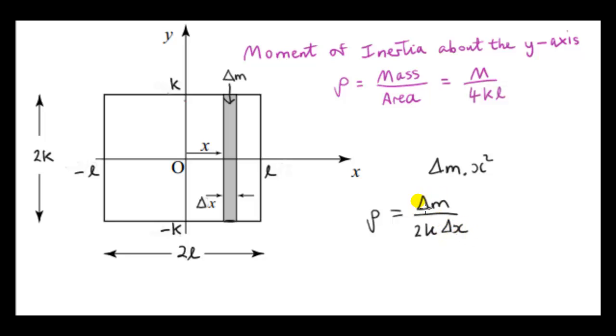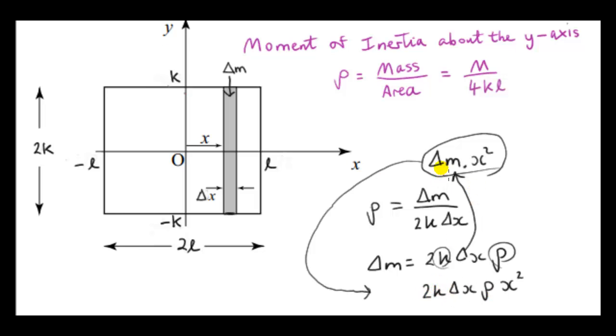So now we can write delta M as mass per unit area times area. Or we can call the mass per unit area the density. It's an area density. So that's what we plug in for delta M. So now our moment of inertia of this strip about the Y axis just involves X's. Rho is just a constant, K is just a constant. So I'm writing it down here, the moment of inertia of the strip about the Y axis.